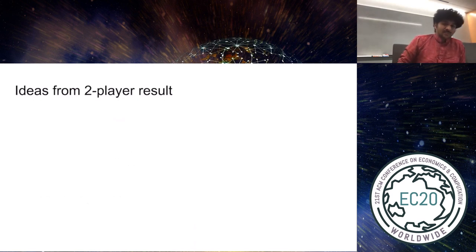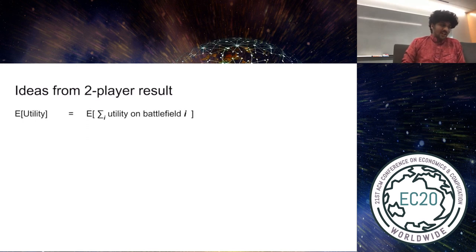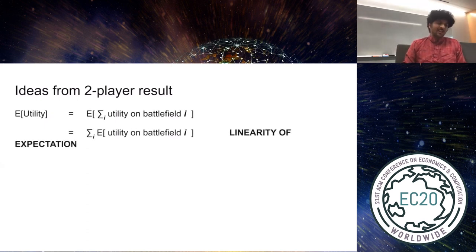Now consider the expected utility of Blotto when he and Alice are playing mixed strategies. His expected utility is the expectation of the sum of the utilities he will get at each battlefield. But of course, by linearity of expectation, we can push the expectation through the sum. So that was simple enough. But the point is, importantly, this means that while Blotto's strategy is a joint distribution over the simplex, his expected utility only depends on the marginal distributions he plays at each battlefield. This realization is a key ingredient to solving the problem.